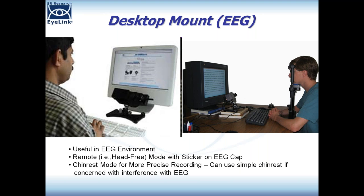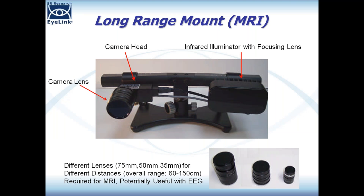In EEG settings you're typically using the desktop mount. In MRI environments you have to use the long range mount, because the MRI environment contains a super strong magnet and you cannot bring anything containing ferromagnetic metal into that environment. You have to use a special version of the iLink camera and illuminator that are safe for those environments. There are different lenses and distances involved. Some people use this with EEG, but it's not really necessary as we've never seen issues with the desktop mount.